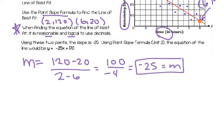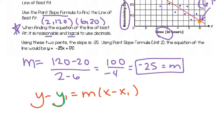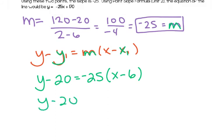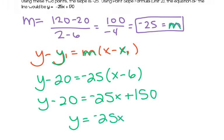Next I'll use point-slope formula: y minus y sub 1 equals m times x minus x sub 1. I'll insert negative 25 for m and choose the point (6, 20) for x sub 1 and y sub 1. So: y minus 20 equals negative 25 times (x minus 6). Then simplify. You can use either point and you will end up with the same equation. This is my line of best fit.